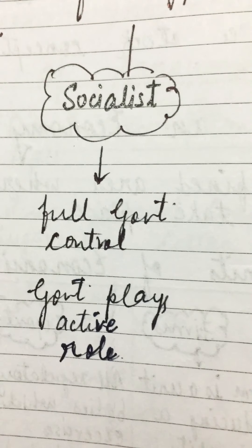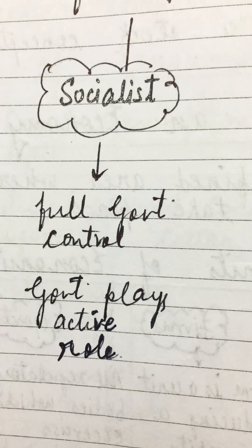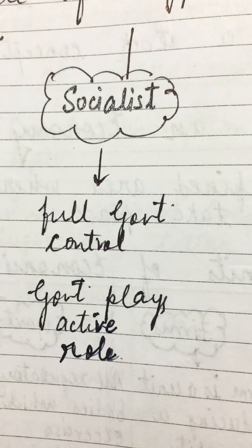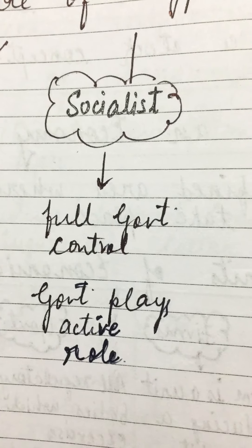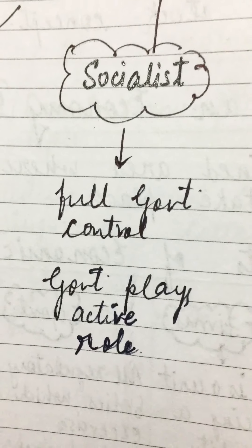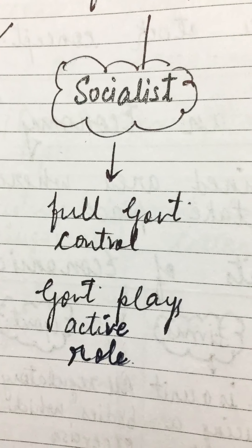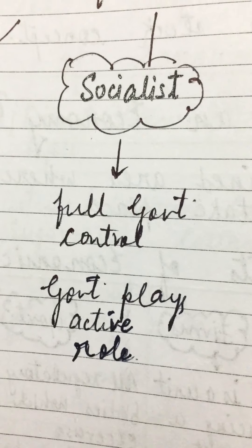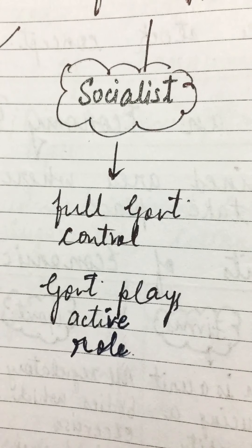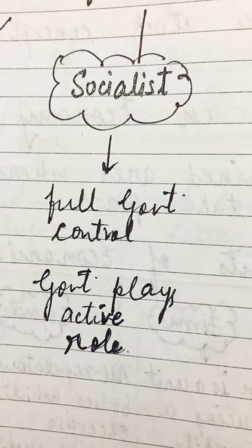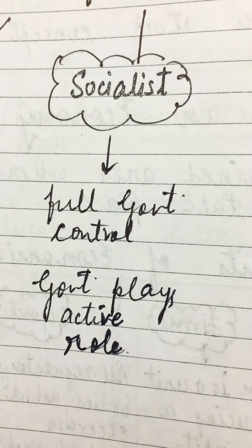In a capitalist economy, the rich become richer and the poor become poorer - people only think about profits. But in a socialist economy, the government has full control and tries to bridge the gap between poor and rich, achieving economic equality. There is no private competition as government is the sole controller.